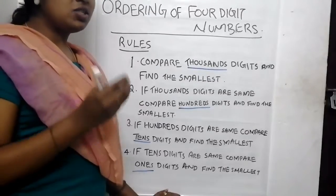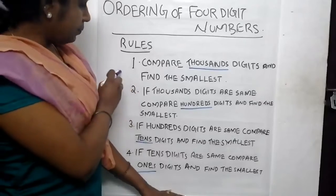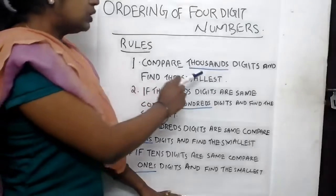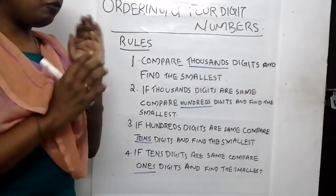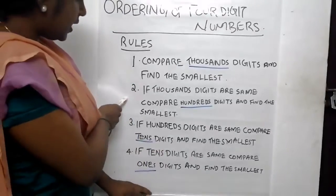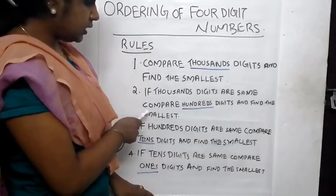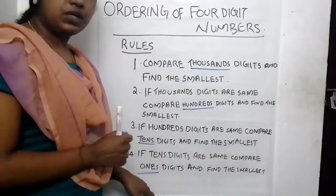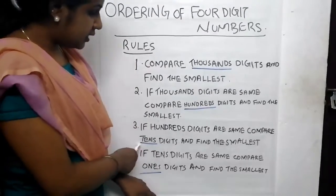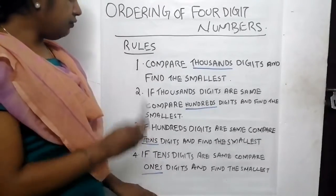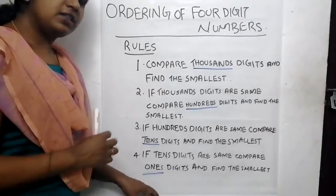We used some methods to compare numbers. We can write these methods as rules. First, we compare thousands digits and find the smallest. Second, if the thousands digits are same, we compare hundreds digits and find the smallest. Third, if hundreds digits are same, we compare tens digits and find the smallest. And if tens digits are also same, we compare ones digits and find the smallest.